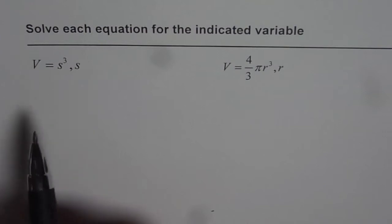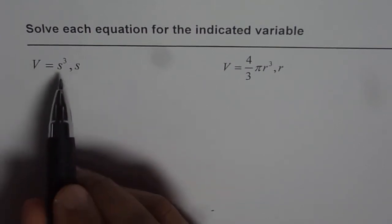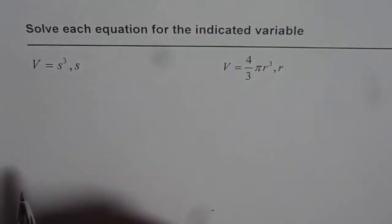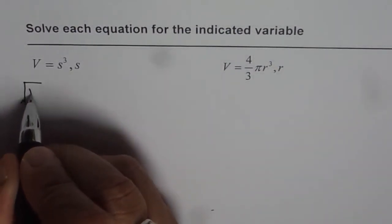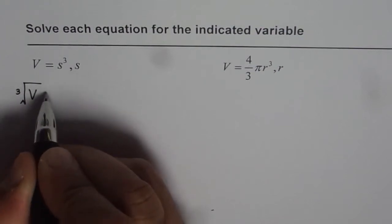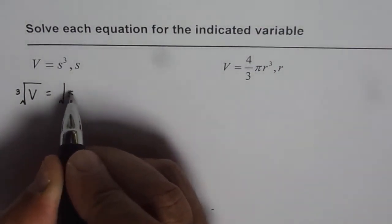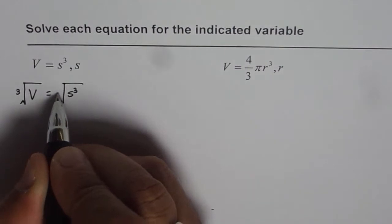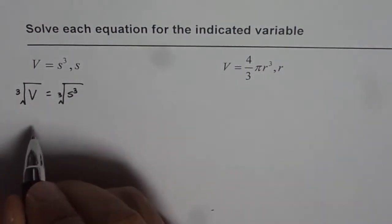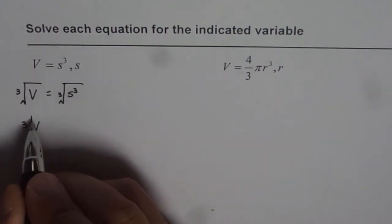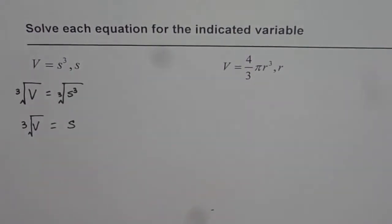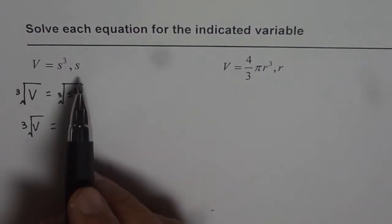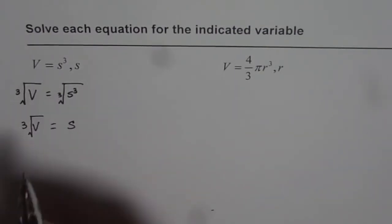The reverse of cube is cube root. So we can isolate S by finding the cube root on both sides. In a way, what we're trying to do is asking what is the cube root of volume and what is the cube root of S³. If you do cube root on both sides, you get cube root of volume equal to the side. That is how we can isolate the side of a cube as the cube root of the volume.